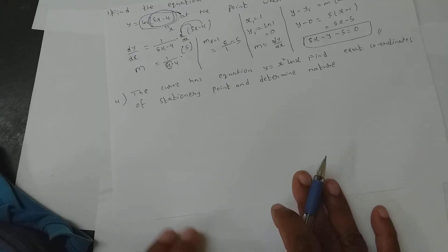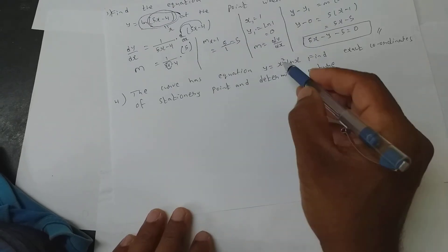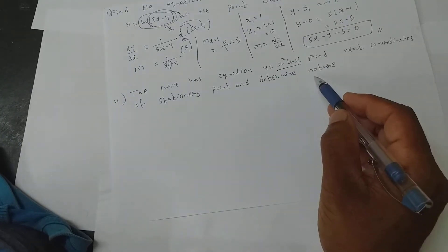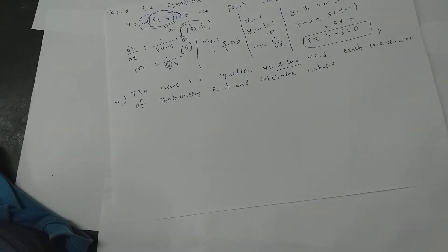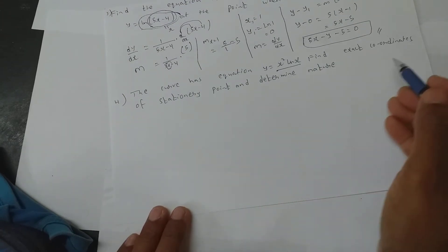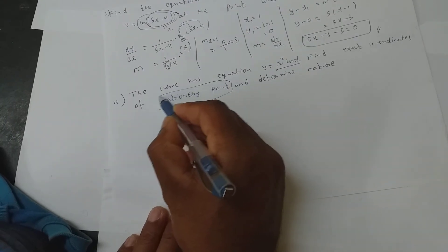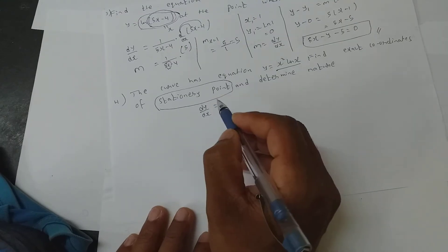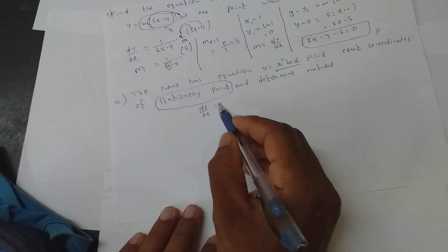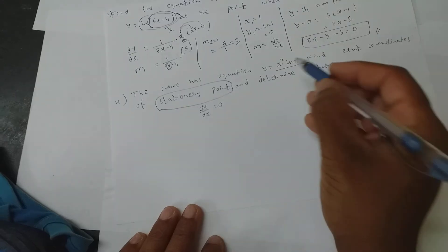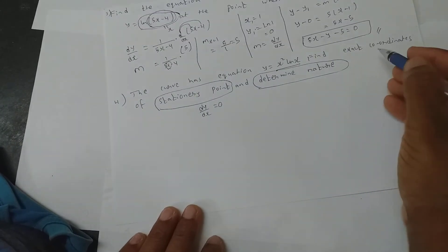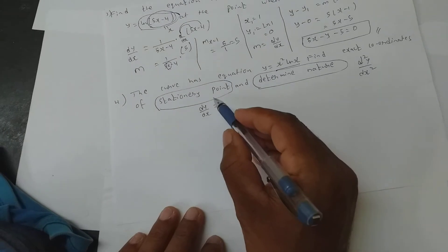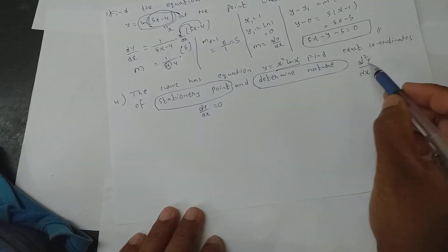Let us look at the next problem. The curve has equation y equals x squared ln x. Find the exact coordinates of the stationary point and determine its nature. Stationary point means dy by dx equals 0. And to determine the nature, you need the double derivative, which is d squared y by dx squared.